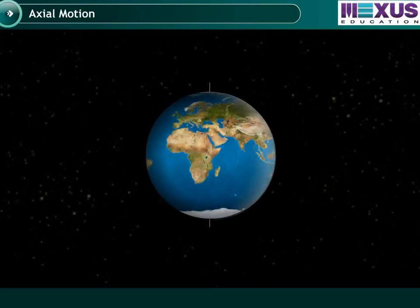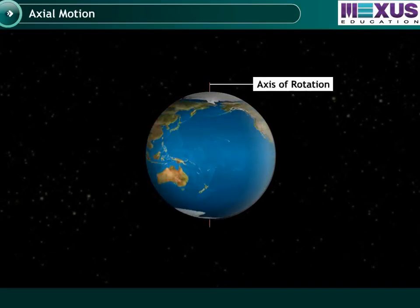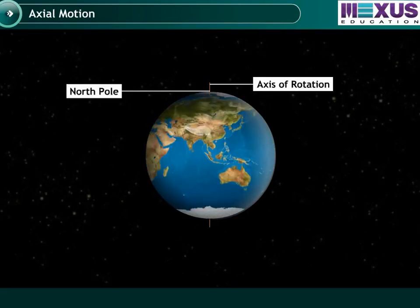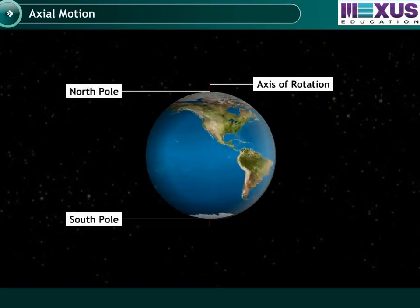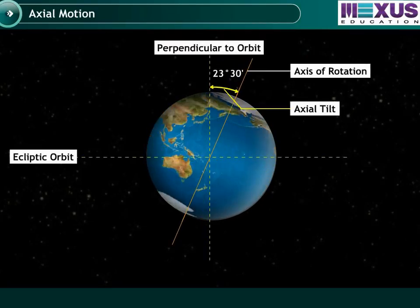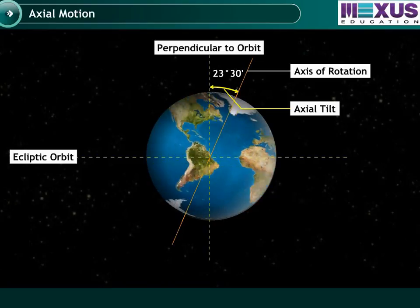Similarly, the Earth spins like a ball around its own axis, which is an imaginary line passing through the North and South Poles. The axis is tilted at an angle of 23 degrees, 30 minutes.